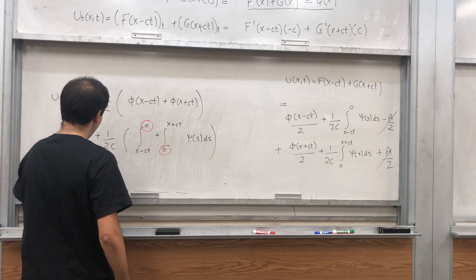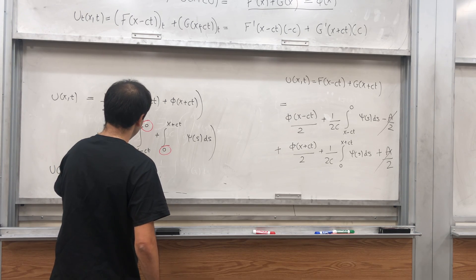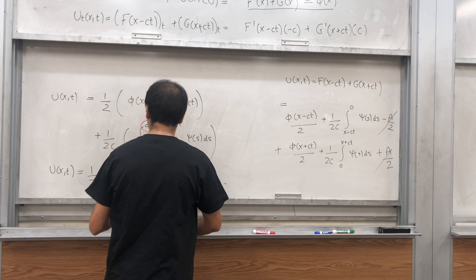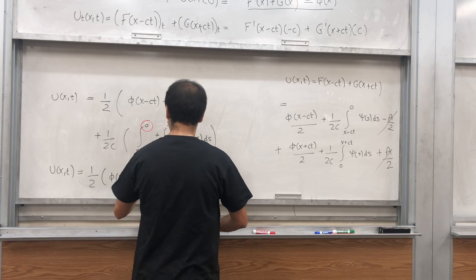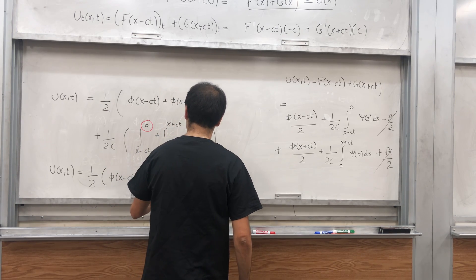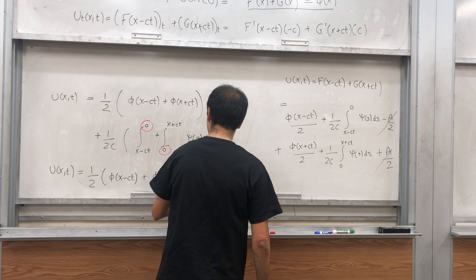And we get u of x,t, it's one half phi of x minus ct plus phi of x plus ct.